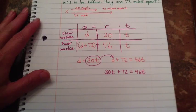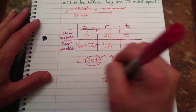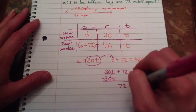And now I'm going to solve for my time. I'm going to subtract 30 from both sides. I get 72 equals 16t.